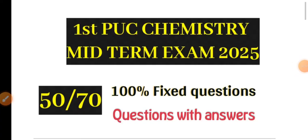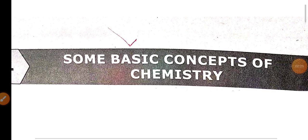Hello students, the first PVC midterm exam is near. In this video on first PVC chemistry, some fixed question and answers are going to be discussed which are 100% very important for the coming exams. Out of 70 marks, I can guarantee that you can score a minimum of 50 marks if you are perfect in these following question answers. The first chapter in chemistry is some basic concepts of chemistry.